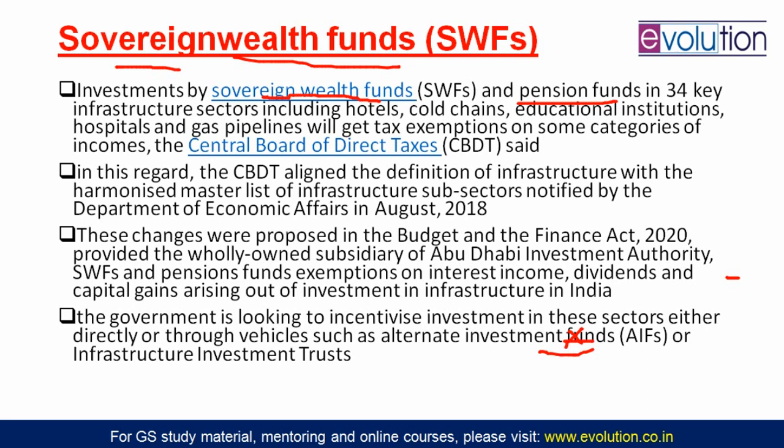Sovereign wealth funds are in news because the government has said that investments made by sovereign wealth funds and pension funds in India in 34 key infrastructure sectors will get some tax exemption on certain categories of income. This notification came from the Central Board of Direct Taxes. The purpose is to attract more reliable foreign investment into India's infrastructure projects.